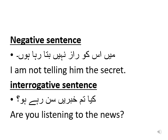For negative and interrogative sentences of present continuous tense, the Urdu indications will not change — sentences still end at 'raha hai', 'rahi hai', or 'rahe hai'. For negative sentences we put 'not', and for interrogative sentences we move the helping verb 'is', 'am', or 'are' to the start. 'Main us ko raas nahi bata raha hun' translates as 'I am not telling him the secret'. 'Kya tum khabre sun rahe ho' translates as 'are you listening to the news', with '-ing' added to main verbs 'telling' and 'listening'.